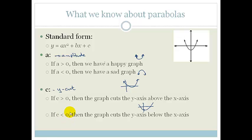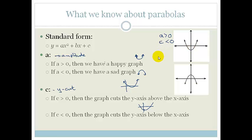Looking at this picture, we can say that a is bigger than 0 because it's a happy graph, and c is smaller than 0 because it cuts below the x-axis — in other words the y-intercept is negative. Whereas in this picture, because it's a sad graph it's concave downwards so a is smaller than 0, but c is greater than 0 because the y-intercept is above the x-axis.